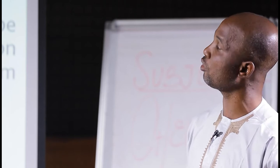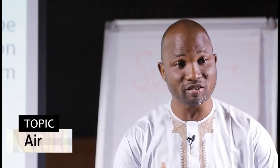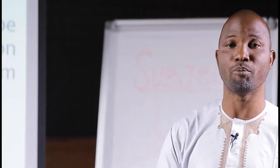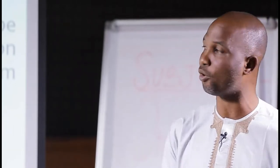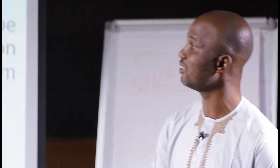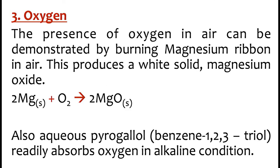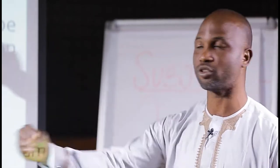The next one is the presence of oxygen. Oxygen is very popular because every human being breathes in oxygen. How do we know that there is oxygen in the atmosphere? Oxygen supports combustion. Often times if you have a candle burning and you cover it with a bucket, it goes off because of lack of oxygen. The presence of oxygen in the air can be demonstrated by burning magnesium ribbon in air. The product is a white solid, which is magnesium oxide. Magnesium plus oxygen gives you magnesium oxide.